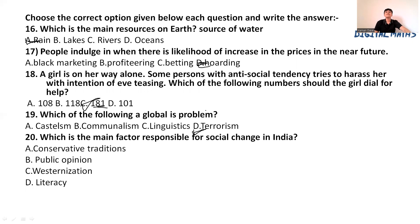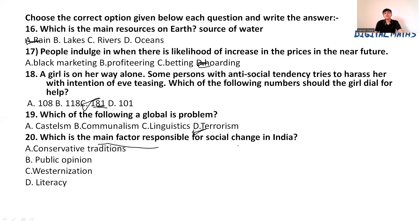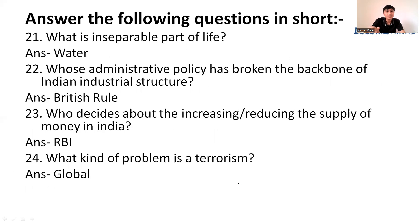Q19: Which of the following is a global problem? The answer is terrorism. Terrorism is now a very big global problem. Q20: Which is the main factor responsible for social change in India — patriotic traditions, public opinion, westernization, or illiteracy? The answer is C, westernization.